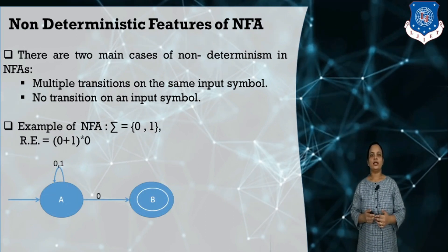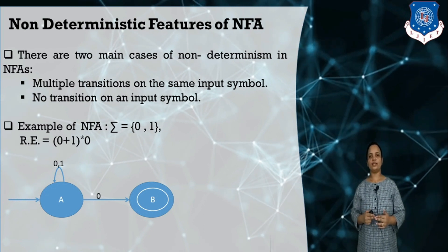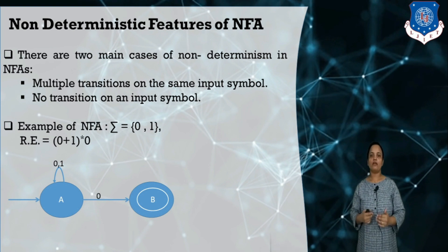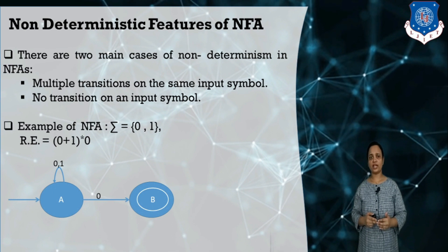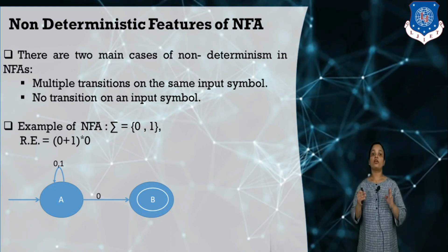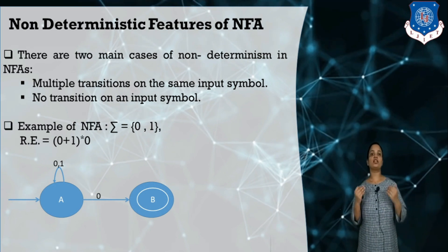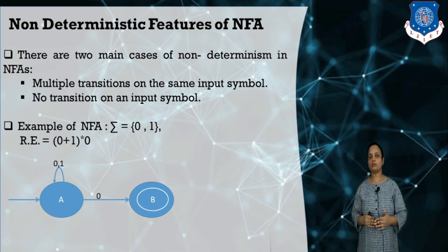Let us understand NFA using the example we already discussed in a previous video. This NFA diagram is for the regular expression (0+1)* · 0, meaning this NFA accepts strings which end with 0. For state A on input symbol 0, it moves to two states: A and B. So for a given input symbol on state A it moves to more than one state, confirming this is a non-deterministic finite automaton. On state B, there is no transition for input symbols 0 or 1.